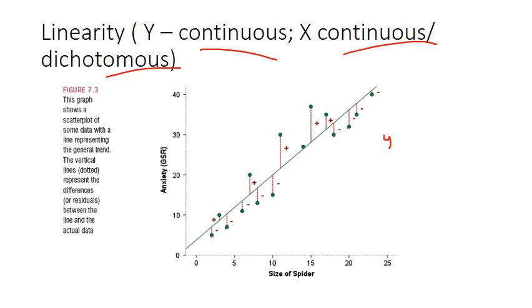So Y minus Y hat, which is the difference between the observed and the predicted, would produce our errors. So our sums of squares of all our errors would basically give us the methods of least squares.